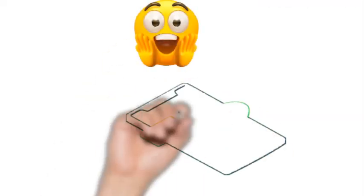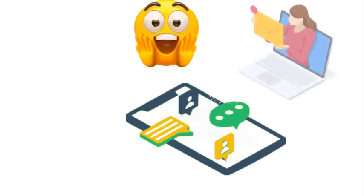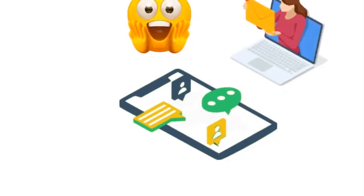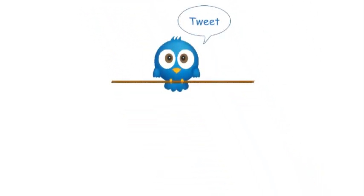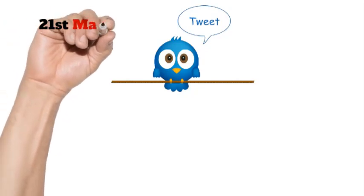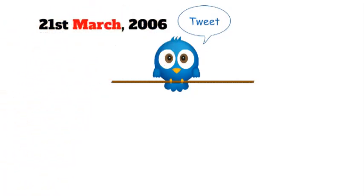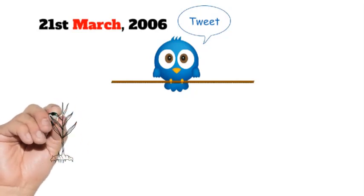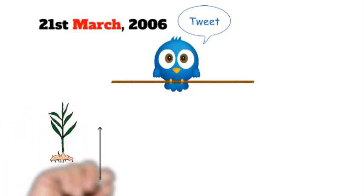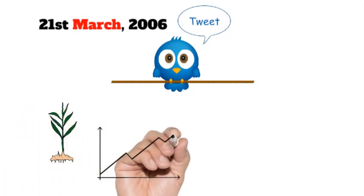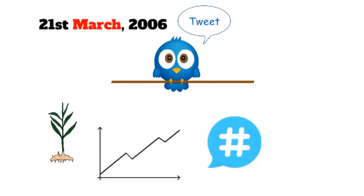Jack's fascination with real-time messaging sparked an idea that would forever change the way we communicate. Twitter's first tweet was sent out on March 21st, 2006, but it wasn't an instant hit. It was more like a tiny seed that took time to grow into a digital giant, eventually setting a trend in microblogging.